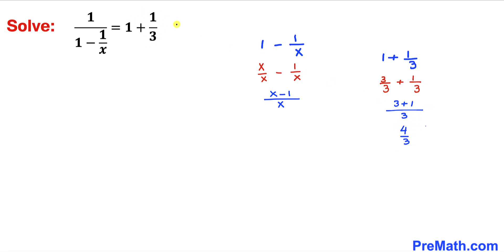Therefore, this equation could now be written by replacing these two fractions. So I'm going to write 1 divided by x minus 1 divided by x equals to 4 divided by 3.